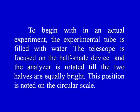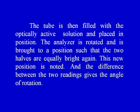In the experiment, to begin with the experimental tube is filled with water, the telescope is focused on the half-shade device, and the analyzer is rotated until the two halves are equally bright. This position is noted on the circular scale. The tube is then filled with the optically active solution and placed in position. The analyzer is rotated to bring the two halves to equal brightness again, and the difference between the two readings gives the angle of rotation accurately.